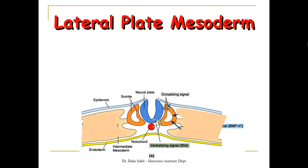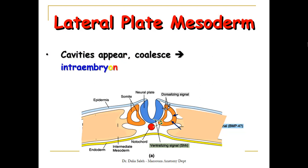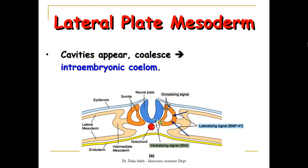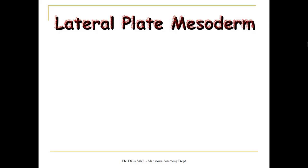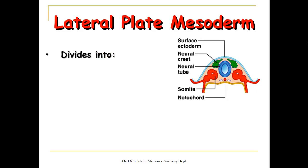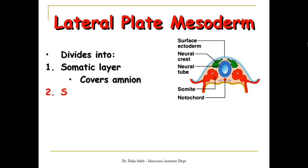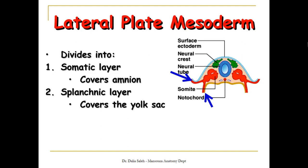For the lateral plate mesoderm, it lies on the periphery. Cavities appear in the lateral plate mesoderm and coalesce together to form the intraembryonic coelome. This intraembryonic coelome gives rise to the cavities inside our body, like the peritoneal cavity, the pelvic cavity, and the pleural cavities. The cavity splits the lateral plate mesoderm into two parts: the somatic layer near the periphery of the body, which covers the amnion, and the splanchnic layer near the endoderm or near the yolk sac.